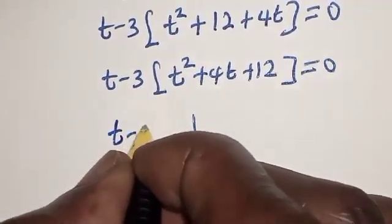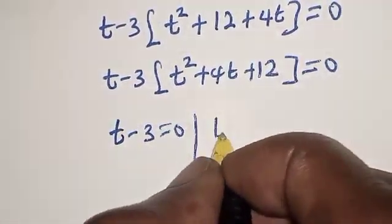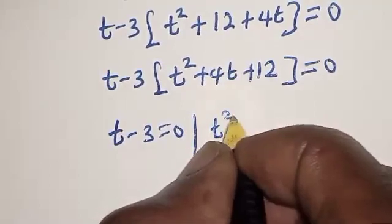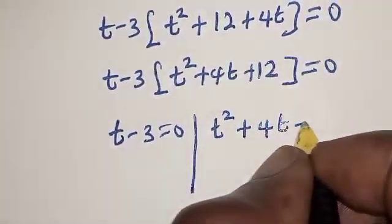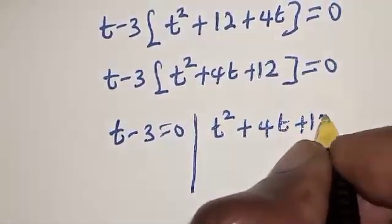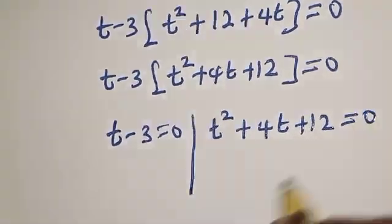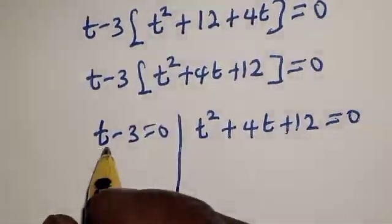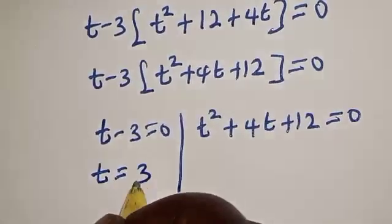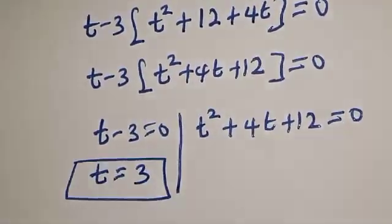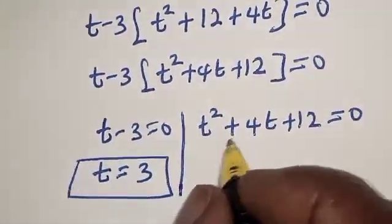There are two cases here. t minus 3 is equal to 0, or t squared plus 4t plus 12 is equal to 0. From the first case, t is equal to 3.